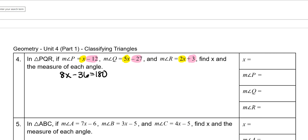All of them added together is equal to 180. Add 36 to both sides. 8x is equal to 216. And then you're going to divide both sides by 8, which makes x 27.